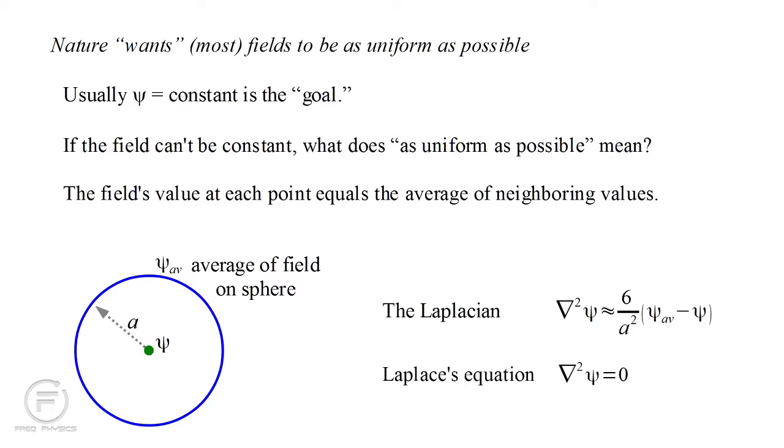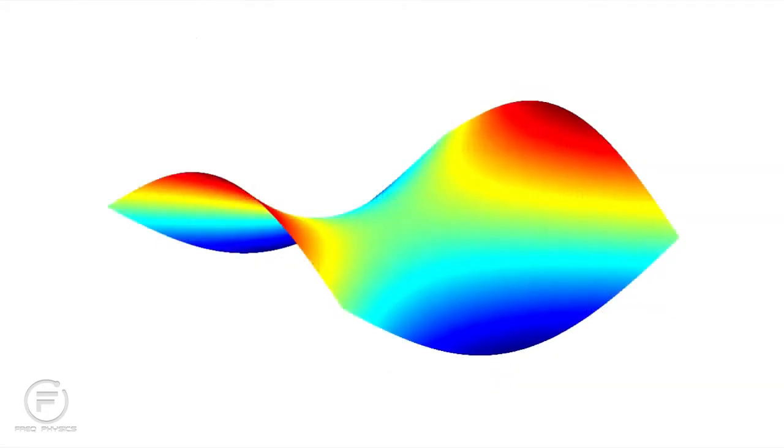In equilibrium, these values are equal, and we have Laplace's equation, which simply tells us that there is no difference between a field value and the average of its neighbors.